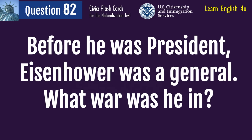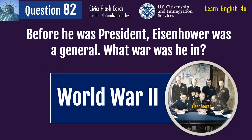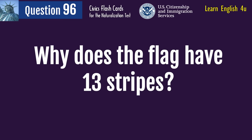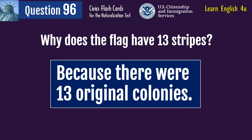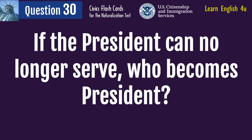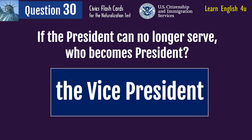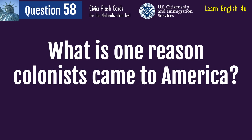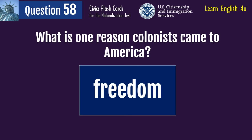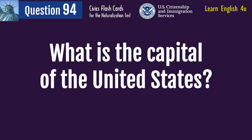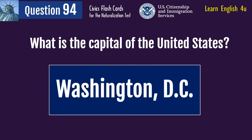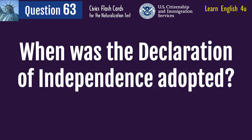Before he was president, Eisenhower was a general. What war was he in? World War Two. Why does the flag have 13 stripes? Because there were 13 original colonies. If the president can no longer serve, who becomes president? The vice president. What is one reason colonists came to America? Freedom. What is the capital of the United States? Washington DC. When was the Declaration of Independence adopted?